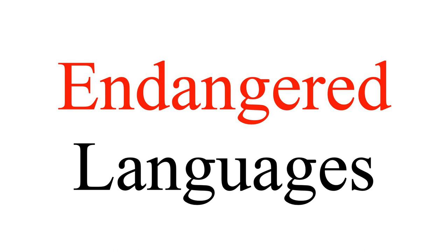For example, typical examples are some languages natively spoken by indigenous people in continental America — people once called Indians. The minor languages I'm talking about are languages spoken by only a few people, or only one or two people. There are many extinct languages in this world, and languages spoken by only a small number of people are called endangered languages.